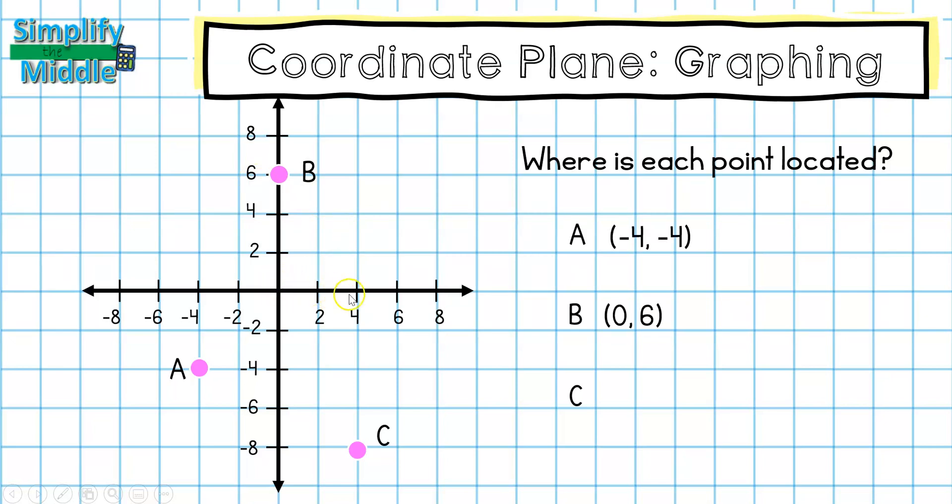For point C, I travel to the right 4 and I travel down 8. So that would be at 4, negative 8.